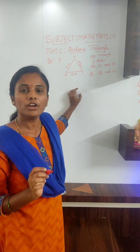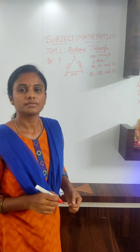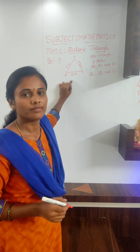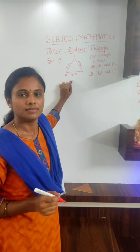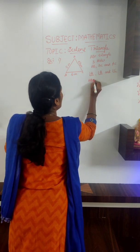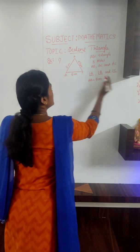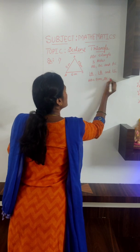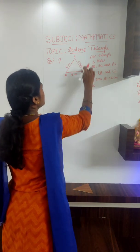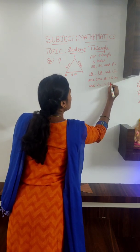What is the measure of each side? AB is equal to 5 cm. BC is equal to 6 cm. And AC is equal to 5.5 cm. Very good. AB is equal to 5 cm. BC is equal to 6 cm. And AC is equal to 5.5 cm.